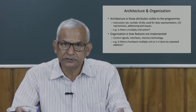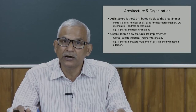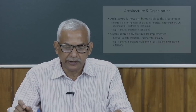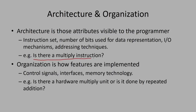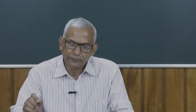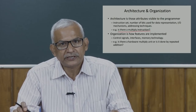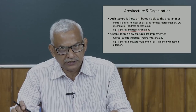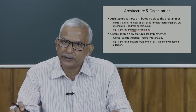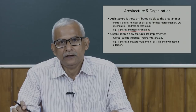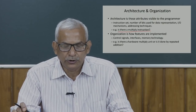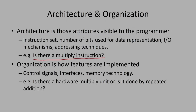Once we freeze the architecture, we go for the implementation, which is the organizational view. For example, is there a multiply instruction? If we decide to include a multiplication instruction, we freeze it at the architecture level and specify its format. In the organization, we determine how to implement those features defined in the architecture — how to generate control signals, how to place components. All those things are discussed in organizational issues.